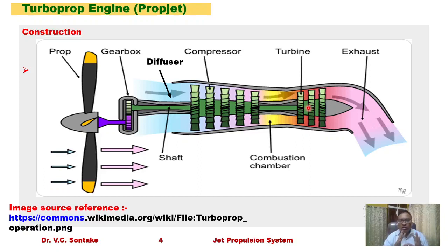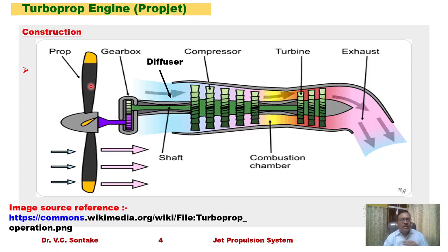The work output of the turbine of the turboprop engine is more than that of the turbojet engine because the turbine has to drive both the compressor and the propeller shaft. After this, very little energy is left in the hot gases that expand in the propelling nozzle to produce thrust. So in the turboprop engine, thrust has two components: thrust produced by the propeller and thrust produced by the hot gases from the propelling nozzle.